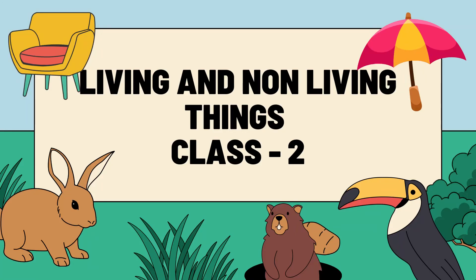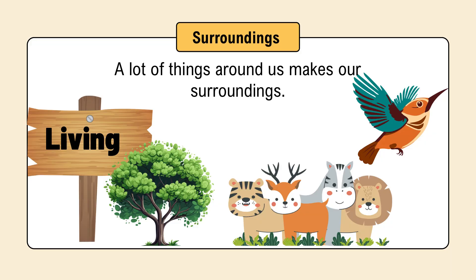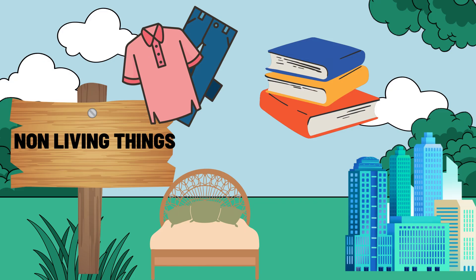The topic of today's video is living things and non-living things for Class 2. We have a surrounding where we live, and a lot of things around us make our surroundings — whether living or non-living. Our surroundings include trees, animals, birds, and humans, which are all living. Non-living things around us include books, beds, buildings, clothes, pens, pencils, and televisions.